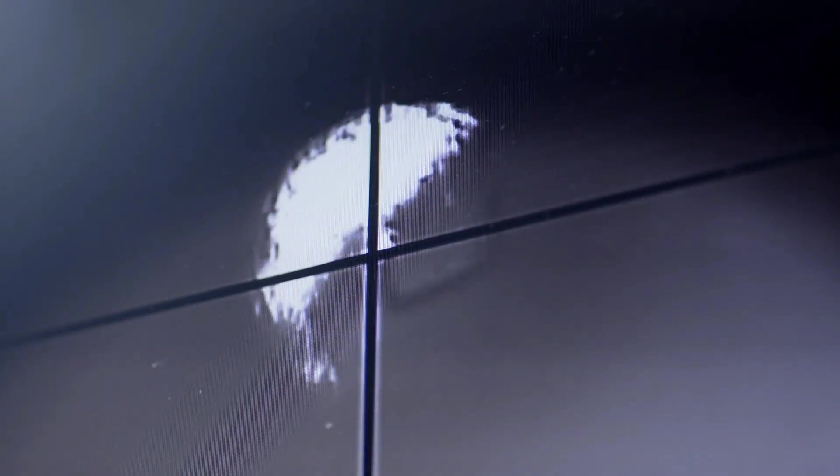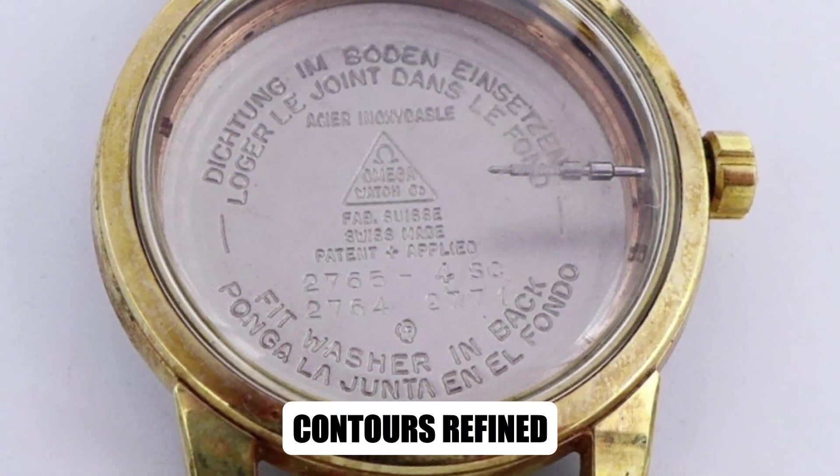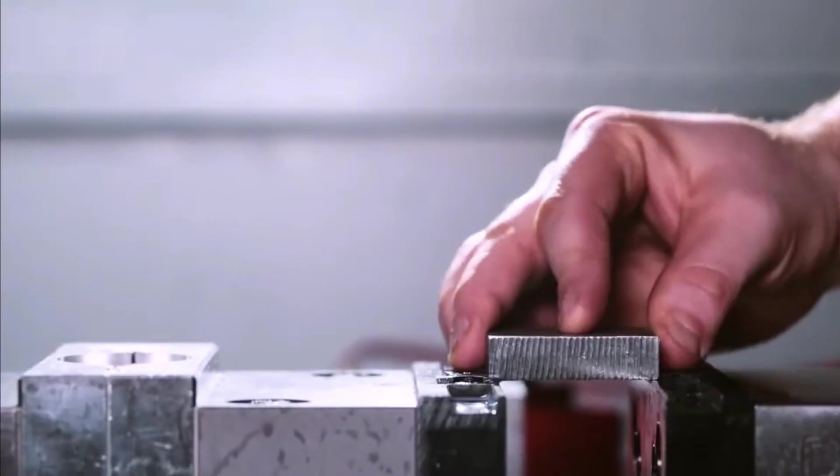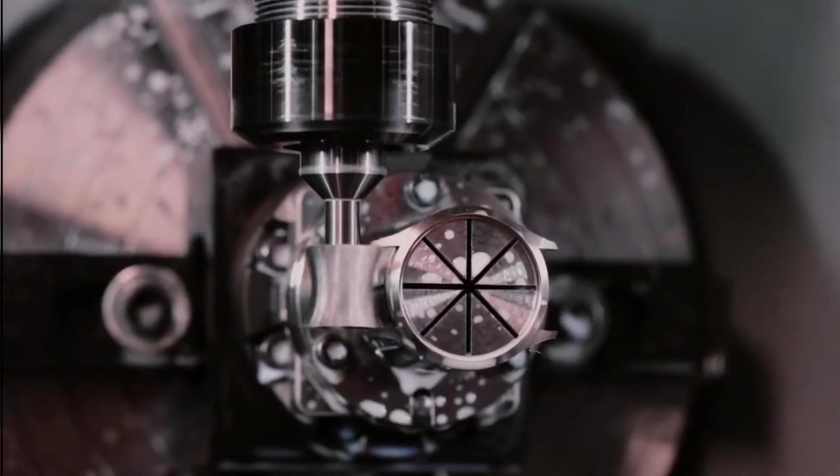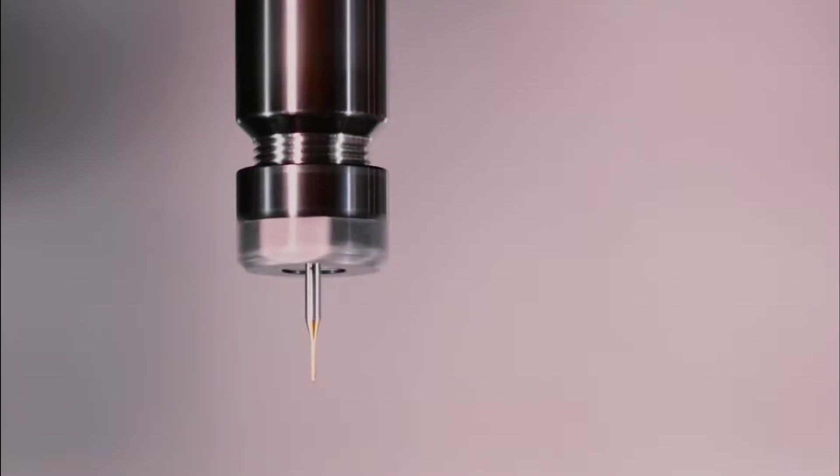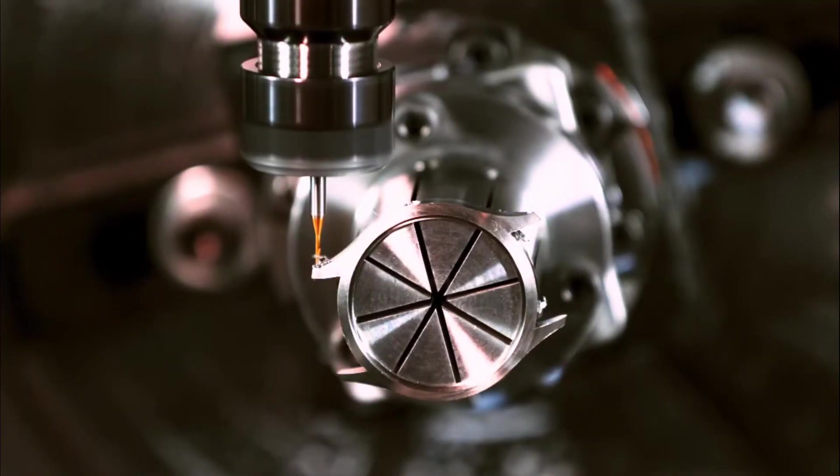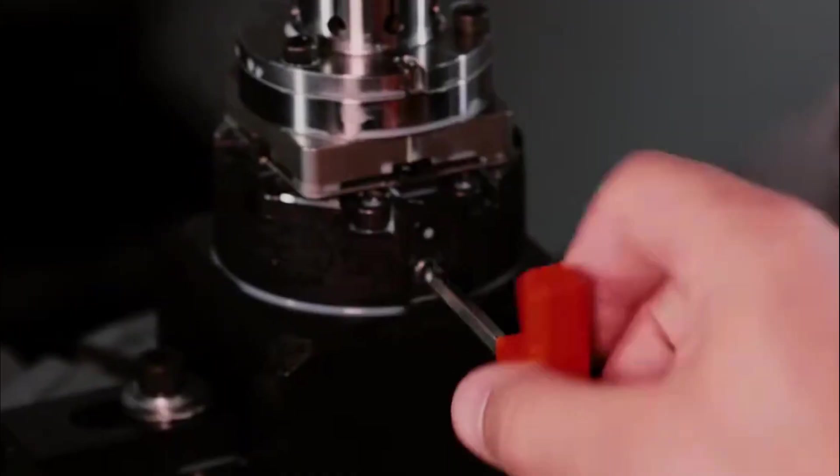Slowly, the raw block is sculpted into elegance, edges softened, contours refined. By the end, what was once lifeless material now carries the first recognizable silhouette of an Omega timepiece, resilient and ready to house history.